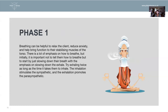Phase one is literally just about breathing. Breathing can help relax the client, reduce anxiety, and bring function to the stabilizing muscles of the torso. Correct and good breathing is incredibly important for stabilization in the torso, probably more so than most exercises. Rather than becoming overly focused on how you breathe, start by just slowing the breath down. The more you can slow that breath down and relax, the more you come out of sympathetic overdrive. Try to exhale twice as long as the inhalation, since inhalation stimulates the sympathetic and exhalation promotes the parasympathetic.